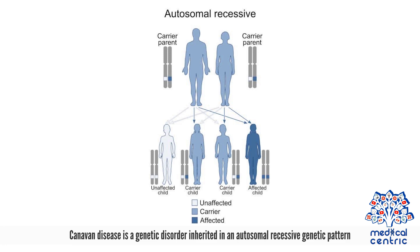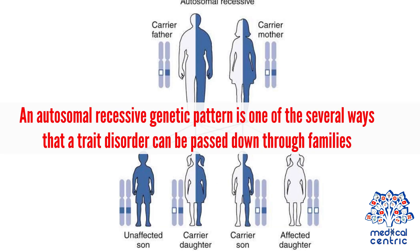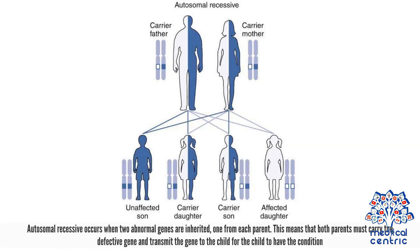Causes. Canavan disease is a genetic disorder, inherited in an autosomal recessive genetic pattern. An autosomal recessive genetic pattern is one of several ways that a trait or disorder can be passed down through families. Autosomal recessive occurs when two abnormal genes are inherited, one from each parent. This means that both parents must carry the defective gene and transmit it to the child for the child to have the condition.